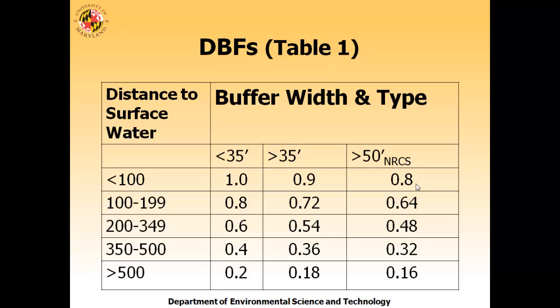The three buffer types are: no buffer or less than 35 feet wide; greater than 35 feet wide; and a 50-foot or greater buffer that meets NRCS standards. Distances to water are partitioned into five categories from less than 100 feet to greater than 500 feet.